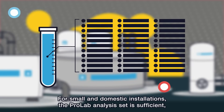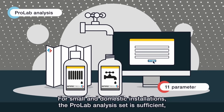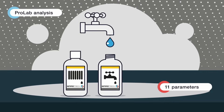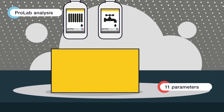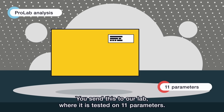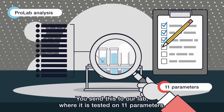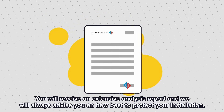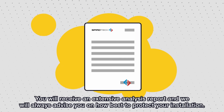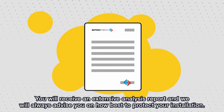For small and domestic installations, the ProLab analysis set is sufficient, with which you take a sample yourself. You send this to our lab, where it's tested on 11 parameters. You will receive an extensive analysis report, and we will always advise you on how best to protect your installation.